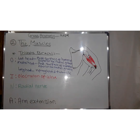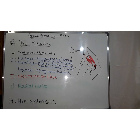Looking at the posterior compartment, the triceps muscle has three heads. The lateral head originates from the posterior surface of the humerus superior to the radial groove, the medial head from the posterior surface inferior to the radial groove, and the long head from the infraglenoid tubercle. The muscle as a whole inserts on the olecranon of the ulna and is innervated by the radial nerve. The triceps brachii is the arm extension muscle at the elbow joint.